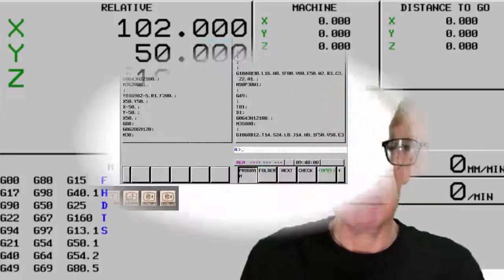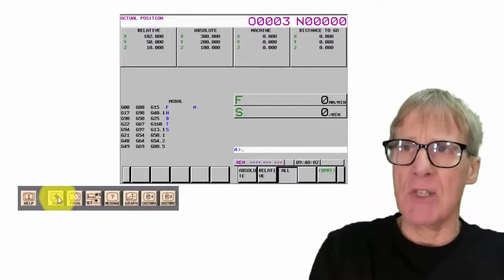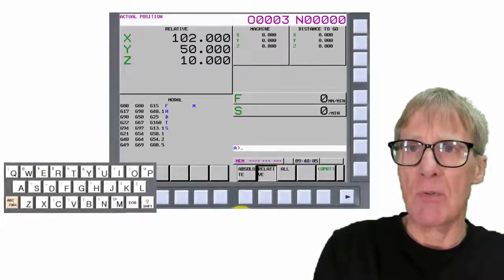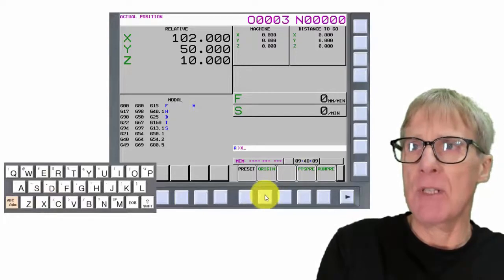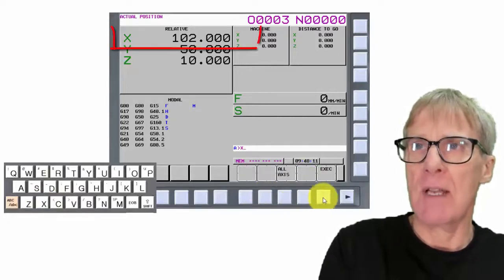First of all, you need to be in your position display, and then you need to press the relative button. On your keyboard, just type in X, and then all you do is press origin execute.